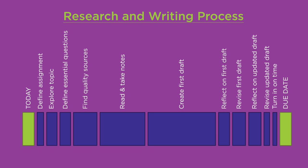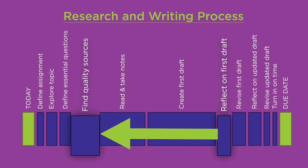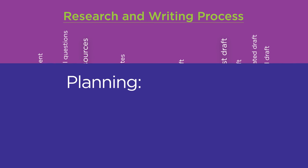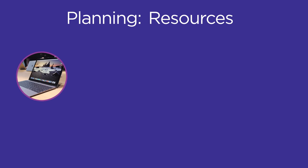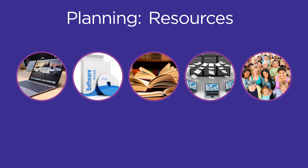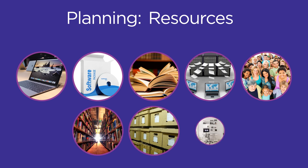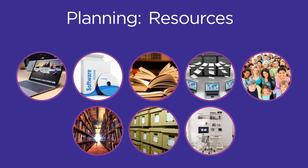For example, when reflecting on your first draft you may notice the need for an additional source to support a specific argument, so you will move back to the finding sources stage. In planning for this assignment, look closely at what types of resources you'll need, such as computer software, books, databases, and people, as well as the places you'll need to go to use them, such as libraries, archives, or quiet time at home.